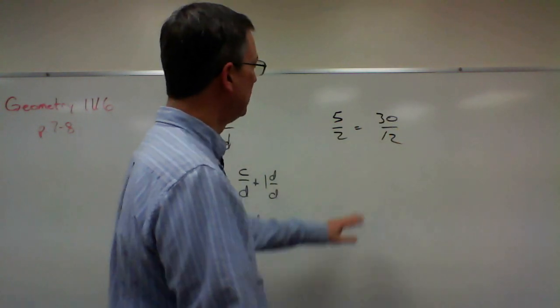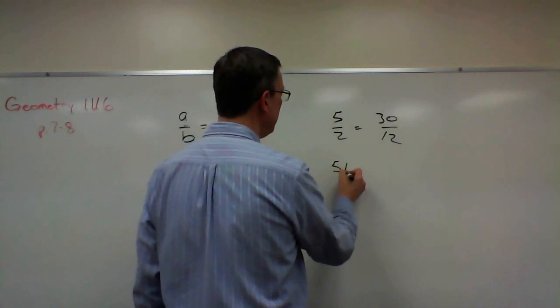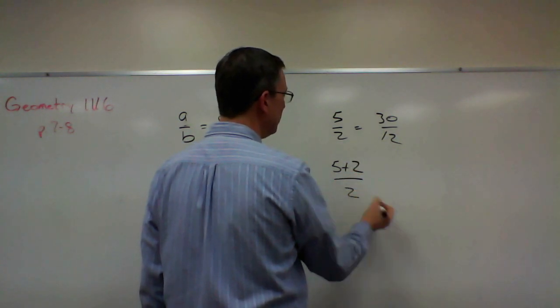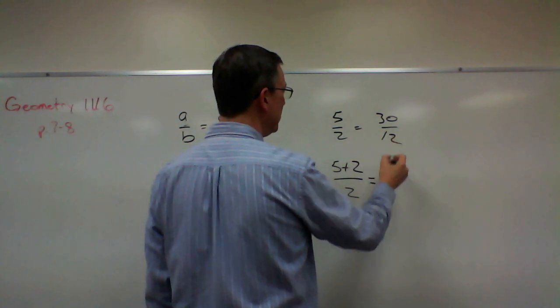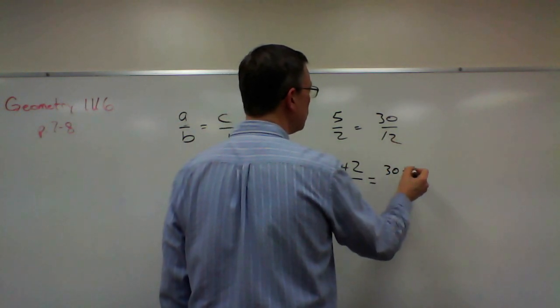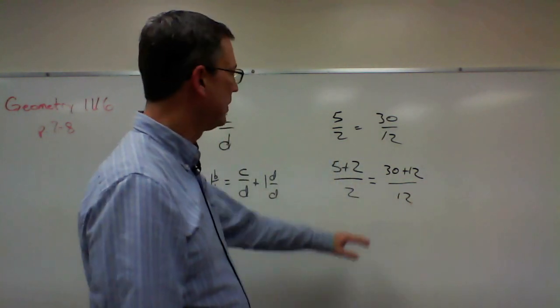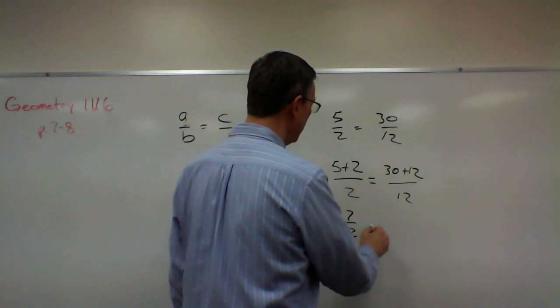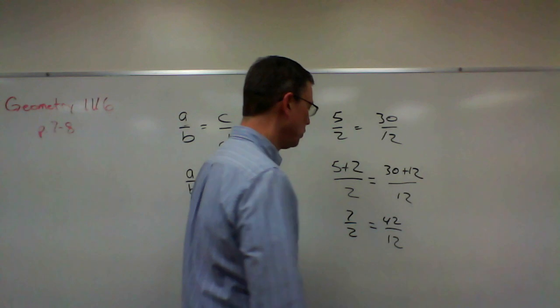So follow with me here. If I'm adding, then I'm going to take 5, add the denominator, which is 2, but keep it over 2. And then over here, I'm going to do 30 plus 12, but keep it over the 12. Let's see what we get. 7 over 2 equals 42 over 12.